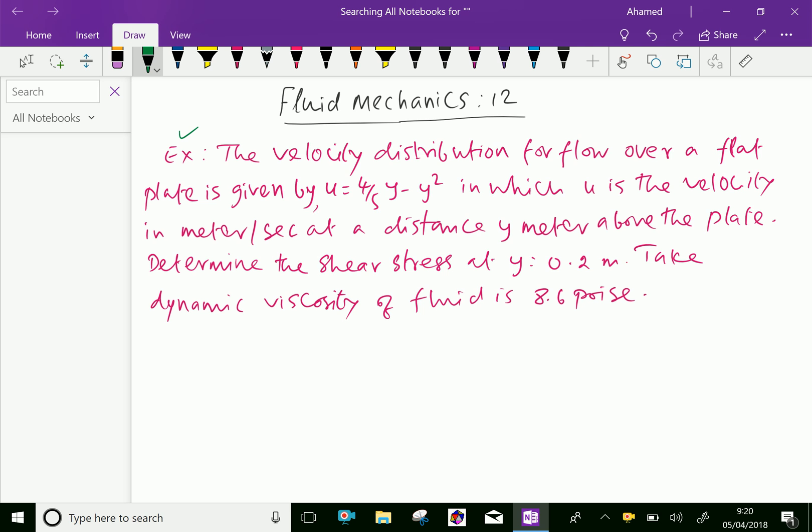Example: The velocity distribution for flow over a flat plate is given by u = 4/5 y - y² in which u is the velocity in meter per second at a distance y meter above the plate.